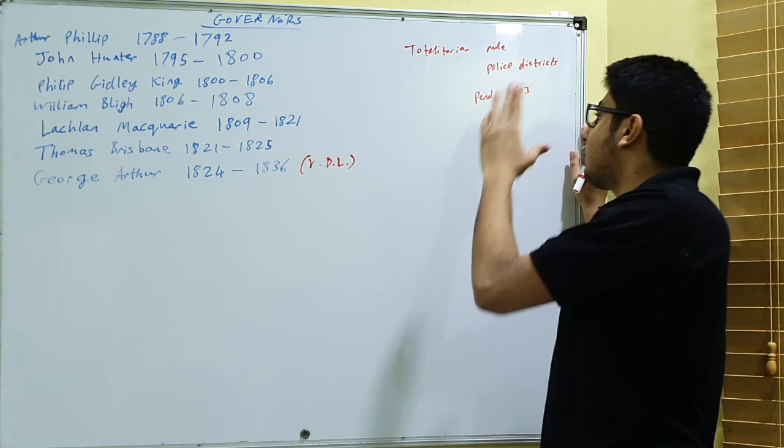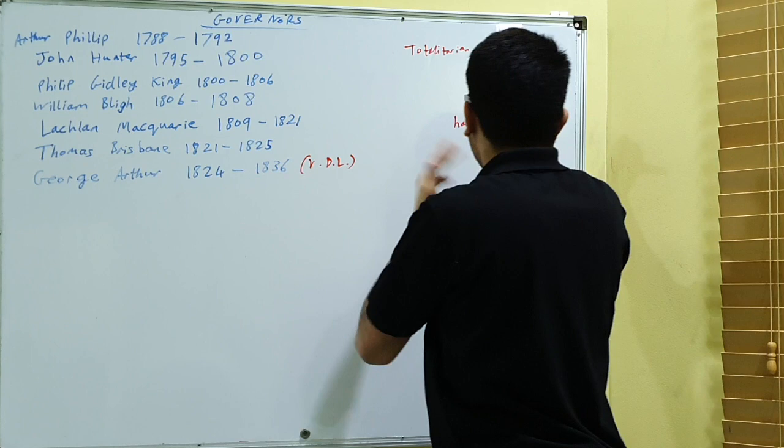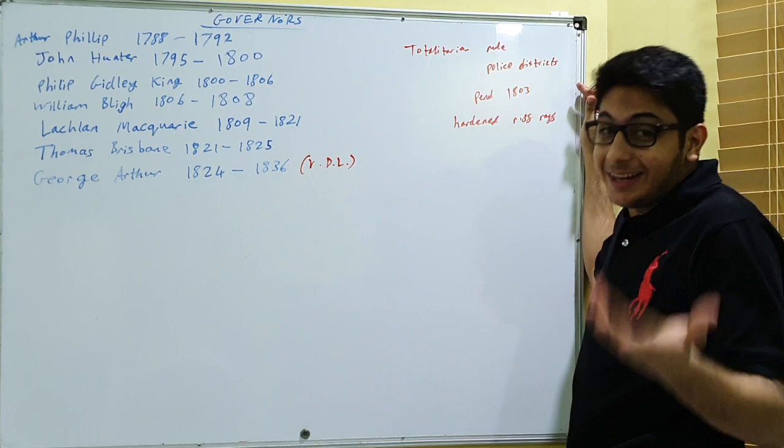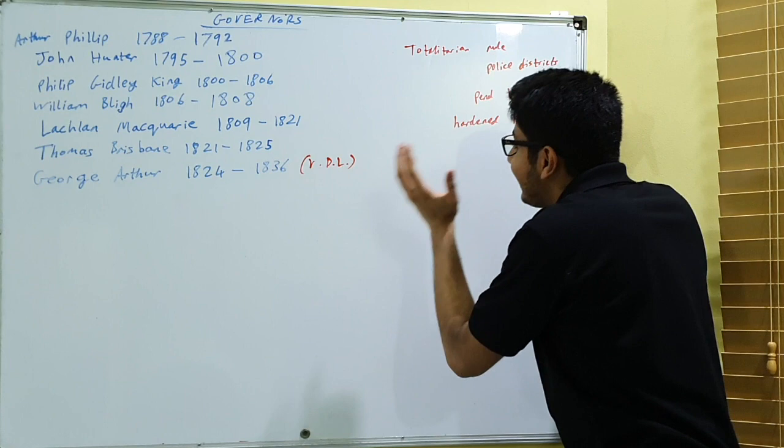So what you have here is a group of hardened, let's call them riffraff. Don't use that word obviously in an essay but that's basically what they were. And so he did not take a liking towards them.